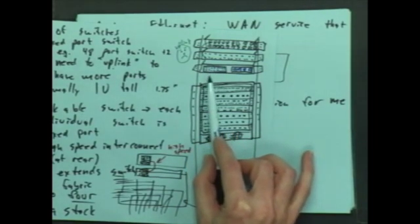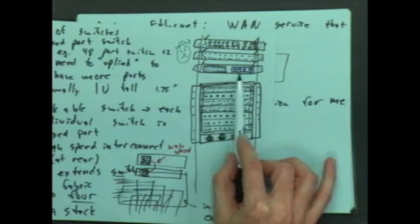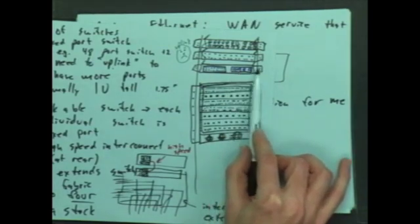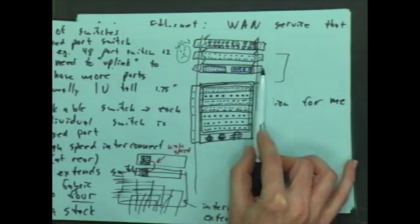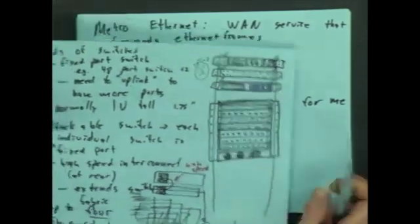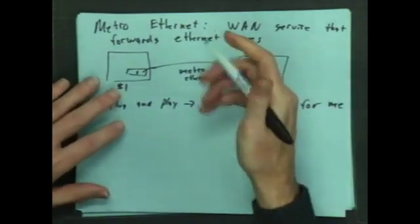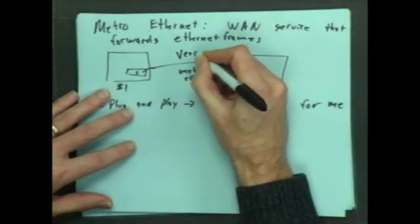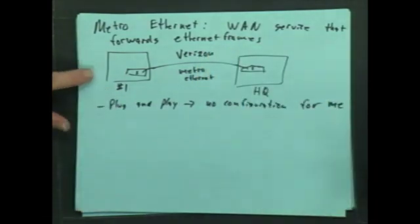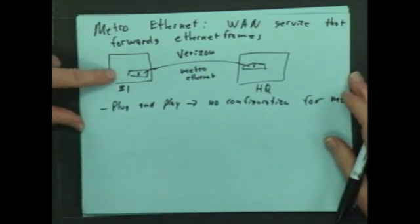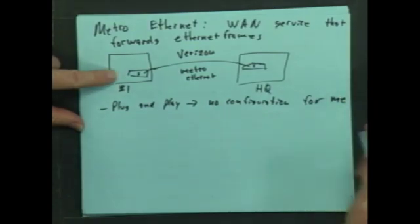And then over here I plug in their server and then I have another connection that goes to HQ using our carrier. So Verizon might have provided this. I'll put Verizon here. Any carrier will give you this. So they'll give me Metro Ethernet. Now here's the even cooler thing about Metro Ethernet.